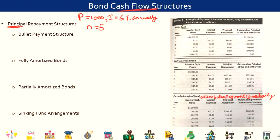For this reading, we have taken the principal value as 1000, the coupon rate or interest rate on these bonds is six percent paid annually, and the time to maturity is five years — so the time period n is five years. The first three structures are best explained with the example in Exhibit 4. The bullet payment structure we've already seen; assuming this is a five-year bond, let's quickly look at the first example.